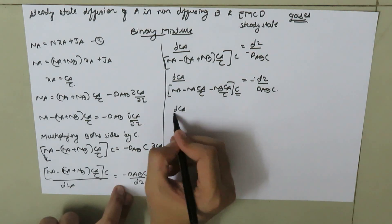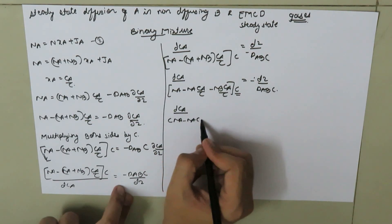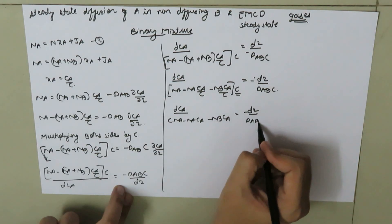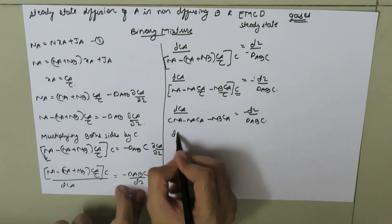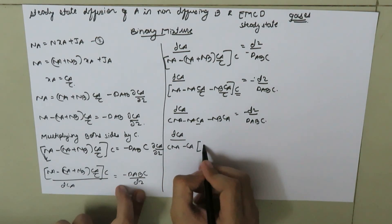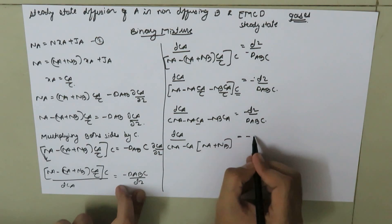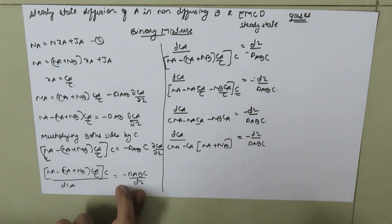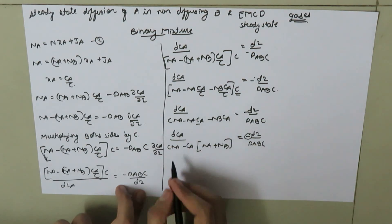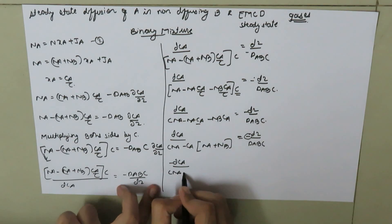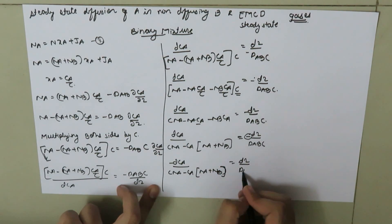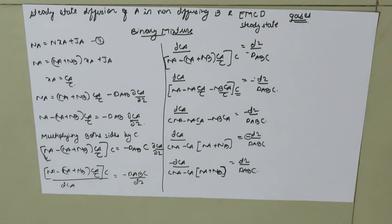Multiplying C inside the bracket and taking C_A common from the relevant terms, we get: dC_A divided by [C times N_A minus C_A times (N_A plus N_B)] equals negative dZ divided by (D_AB times C).